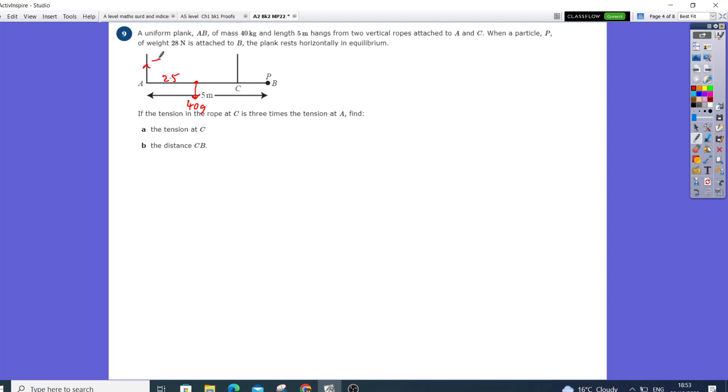We have two tensions: tension here at A (TA) and tension holding up here at C (TC). There's a particle with 28 newtons coming down here.